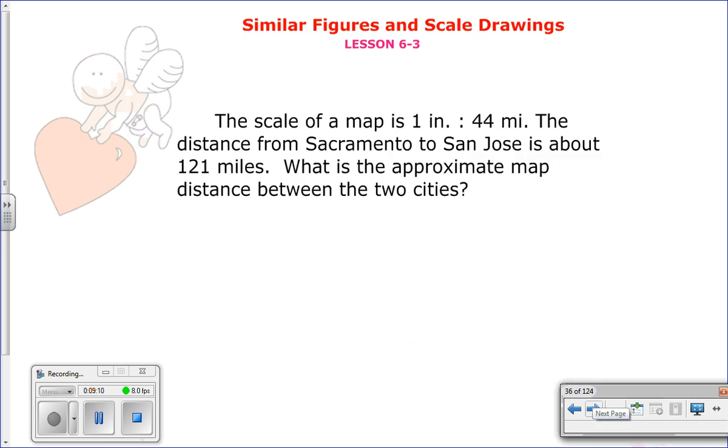The scale of the map is 1 inch is to 44 miles. Again, that's a ratio. The distance from Sacramento to San Jose is about 121 miles. What is the approximate map distance between the two cities? So, go ahead and set up your proportion. And when you're done, come back and check your answer. Pause me now.